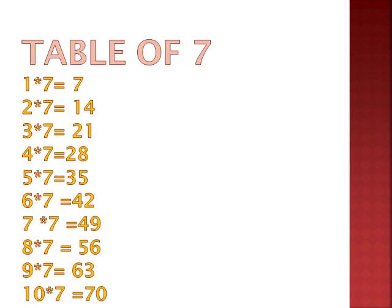Now we will do the table of 7. 1 seven is 7, 2 sevens are 14, 3 sevens are 21, 4 sevens are 28, 5 sevens are 35, 6 sevens are 42, 7 sevens are 49, 8 sevens are 56, 9 sevens are 63, 10 sevens are 70.